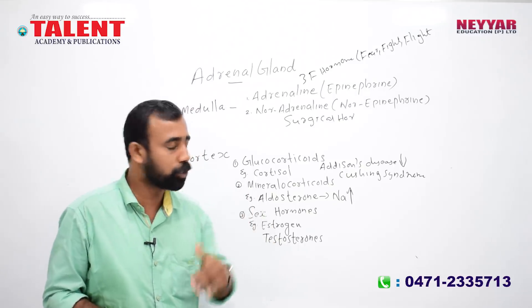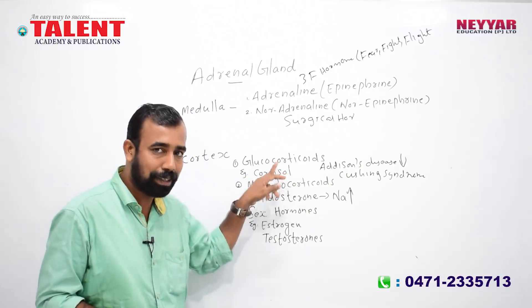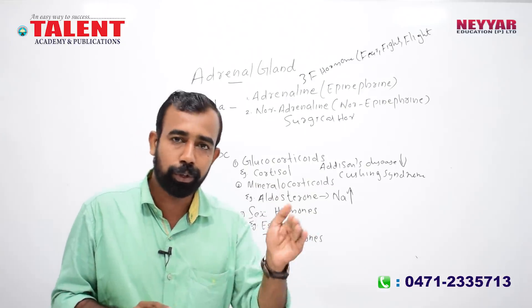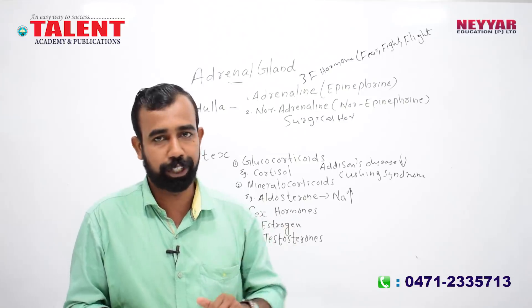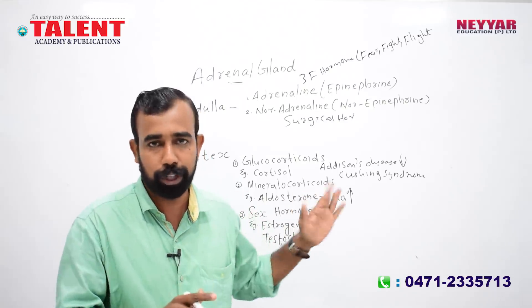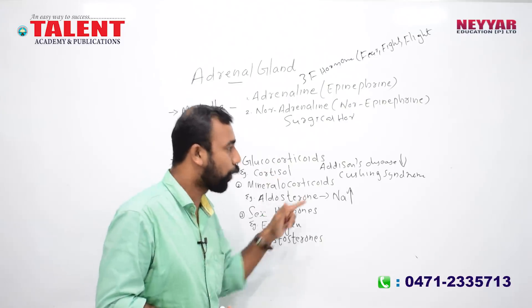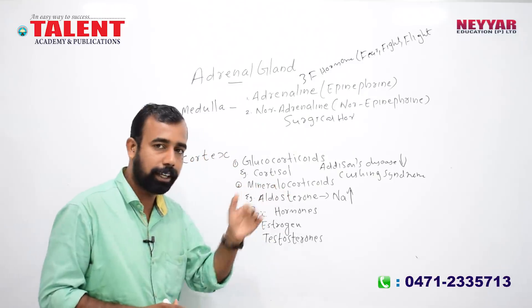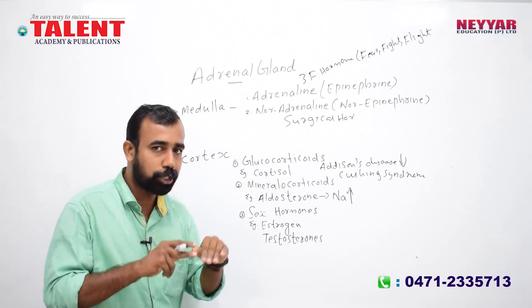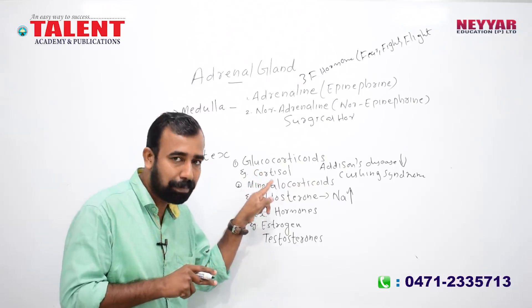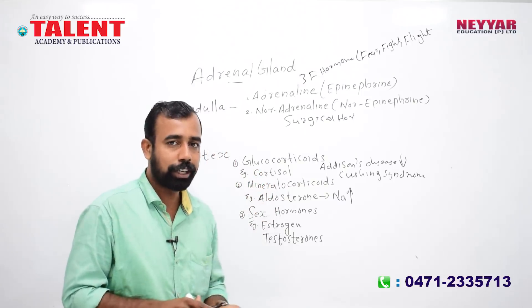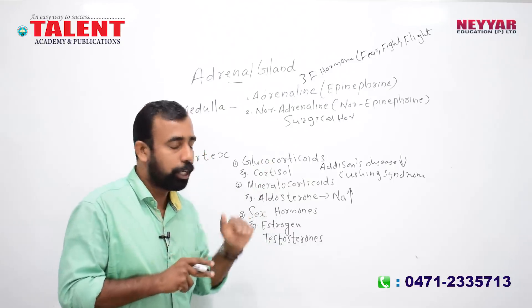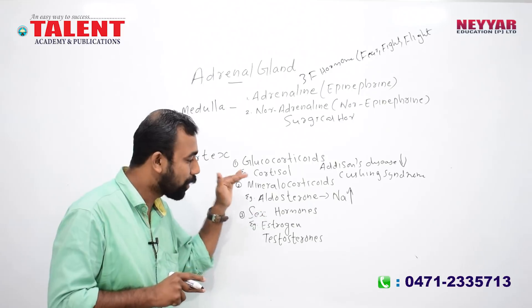The three cortex hormones include glucocorticoids, mineralocorticoids, and sex hormones. Glucocorticoids handle carbohydrate metabolism, with cortisol as an example — starvation and protein factors lead to glucose conversion. Cortisol is associated with Addison's disease and Cushing's syndrome. Mineralocorticoids such as aldosterone regulate water and electrolyte balance by promoting sodium ion reabsorption.